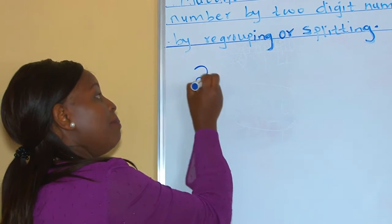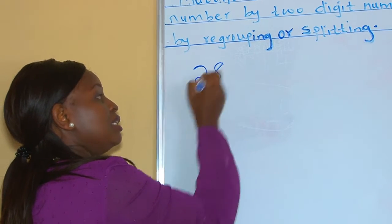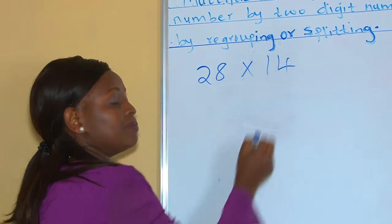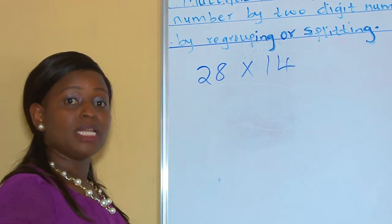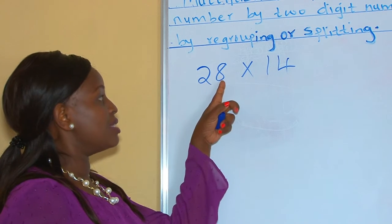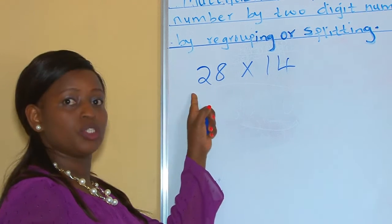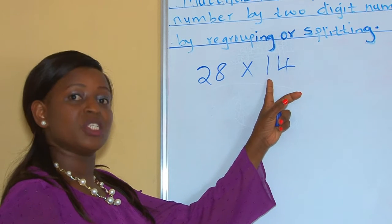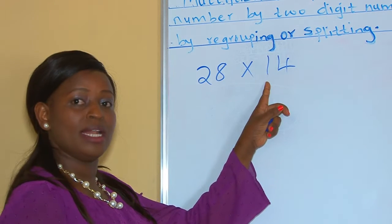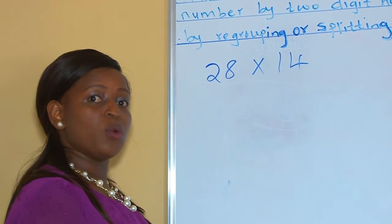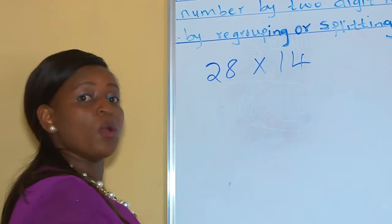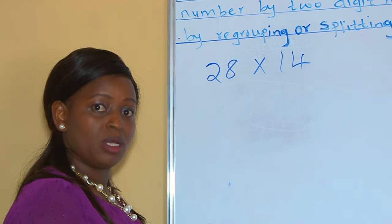For instance, if you are given a number like 28 multiplied by 14. This 28 is two digits because it has 8 and 2. This 14 is also two digits — it has 4 and 1. So when you want to multiply the two digits, we regroup them or split them.